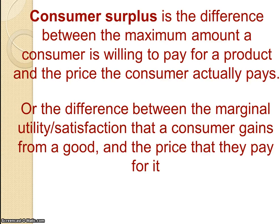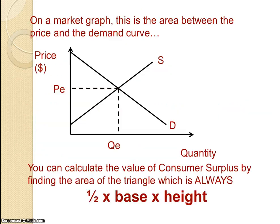For those of you who are familiar with marginal utility, it's the difference between the satisfaction you would get from buying a product — if you put a price value on that — and the price you had to pay. On the graph, it's the area between the price PE and the demand curve.